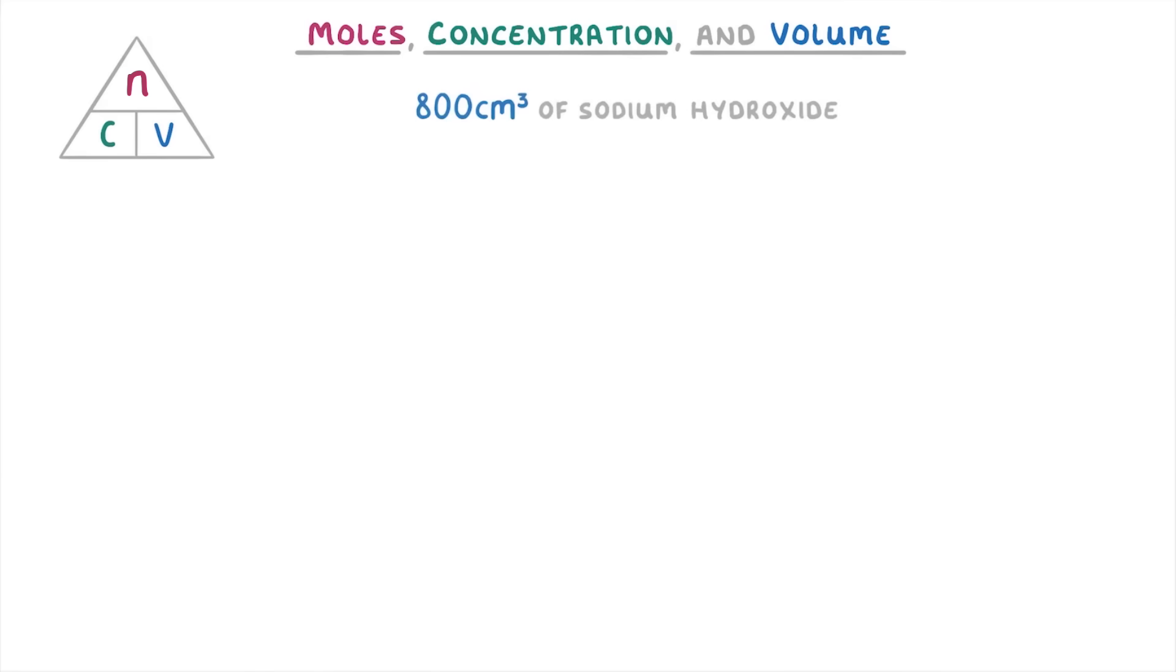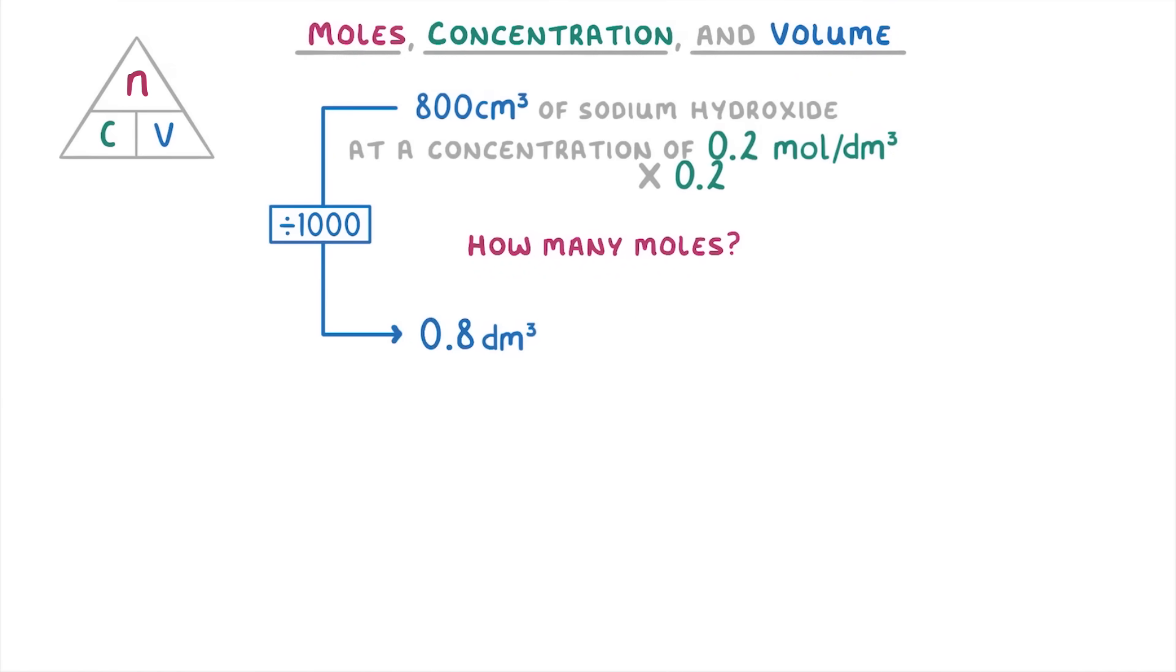So, if we had 800 centimetres cubed of sodium hydroxide at a concentration of 0.2 moles per decimetre cubed, then to find out how many moles we had in total, we would just divide our volume by 1000 to make it 0.8 decimetres cubed, and then do volume times concentration, so 0.8 times 0.2, which gives us 0.16 moles.